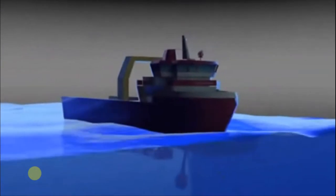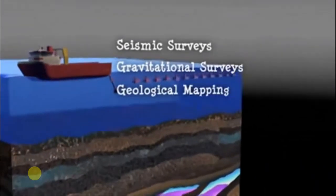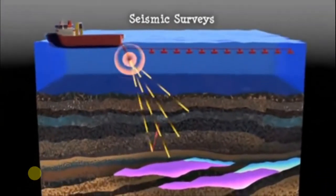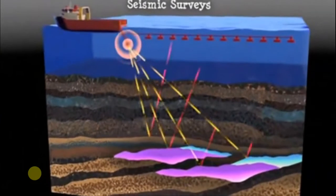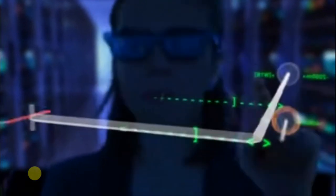To find oil and gas deposits, geologists use a number of different survey techniques, including seismic surveys, gravitational surveys, and geological mapping. Seismic surveys use reflected sound waves to produce a 3D view of the Earth's interior. New technologies, such as four-dimensional projections and sophisticated graphic renderings of rock structures, are improving the way we find conventional oil and gas deposits.